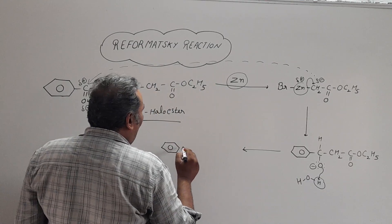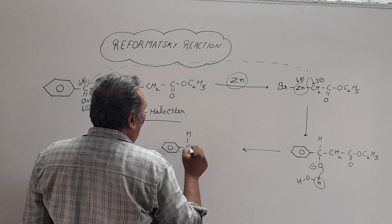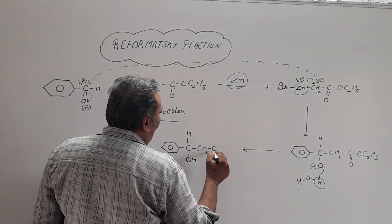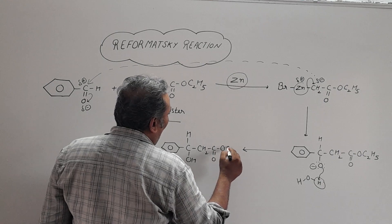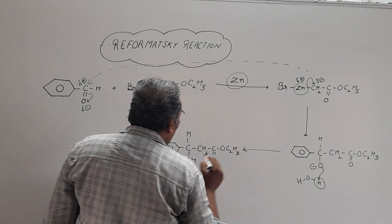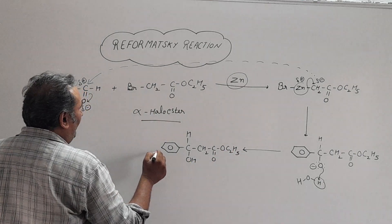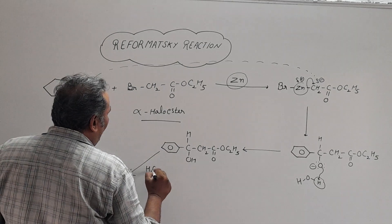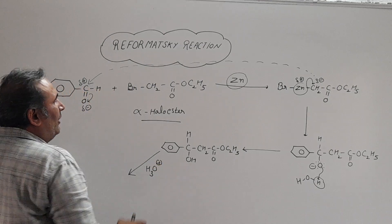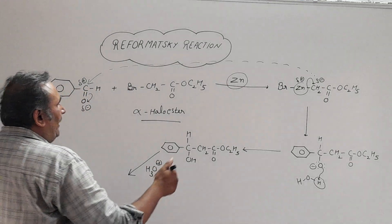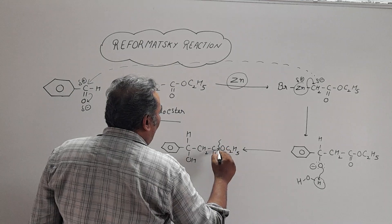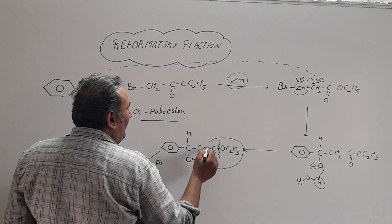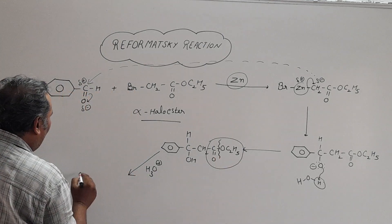So our product will now be: OH-CH-CH₂-C(=O)-O-C₂H₅. When we hydrolyze this compound by acidic hydrolysis, this whole compound gets converted into a carboxylic acid.